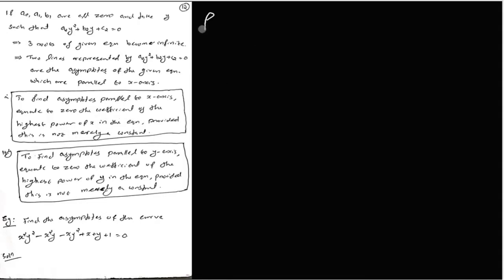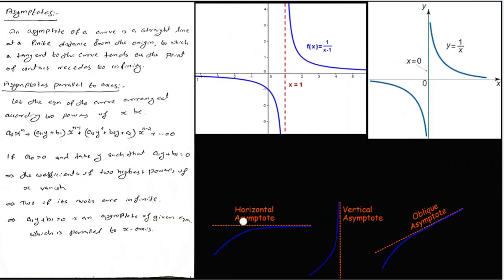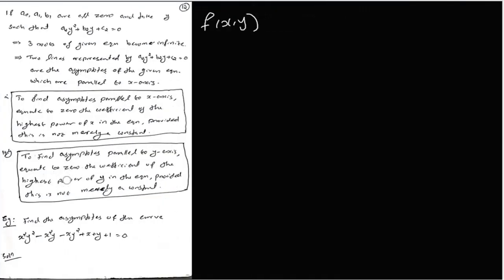The equation is given by x, where x is the highest power. That coefficient gives the asymptote parallel to the x-axis, which is the horizontal asymptote. To find the asymptote parallel to the y-axis — the vertical asymptote — equate to zero the coefficient of the highest power of y in the equation, provided it is not merely a constant.